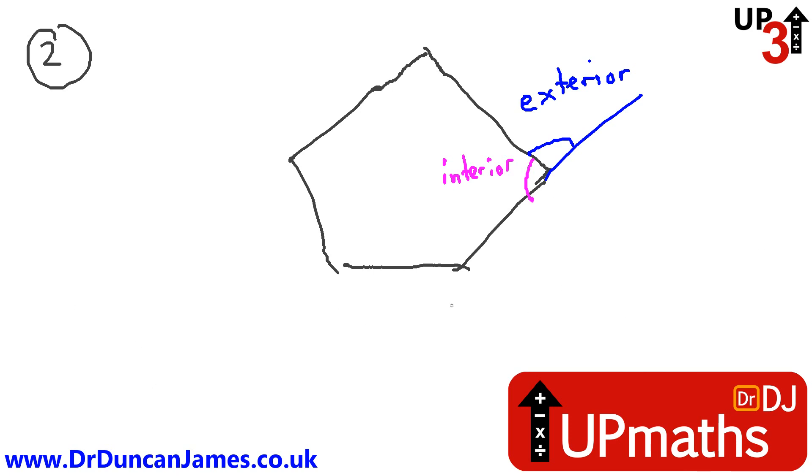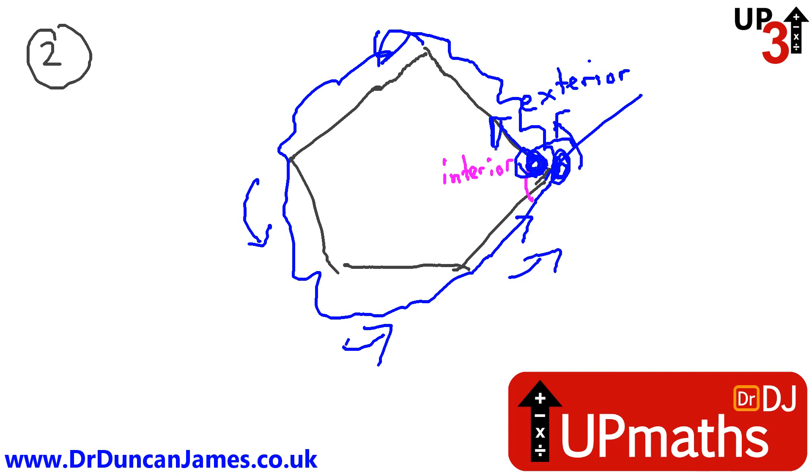What if somebody goes for a walk? So they start here, and they go for a wander all the way around, and they end up by where they started. Then they will have turned, if they head off in this direction, they'll turn one corner, two corners, three corners, four corners, and then a fifth corner to end up exactly back where they started facing that way.